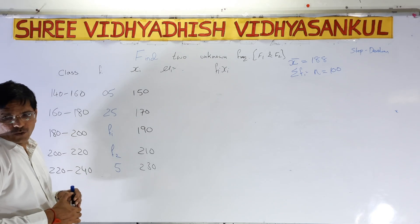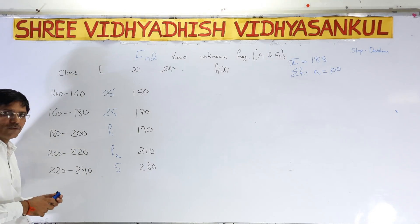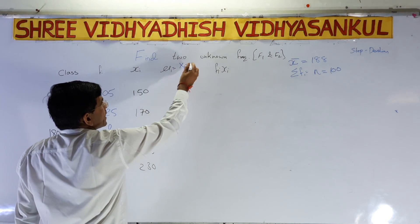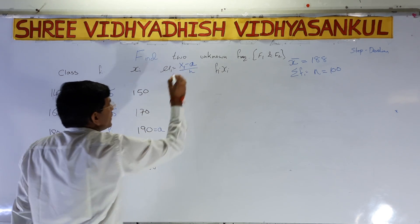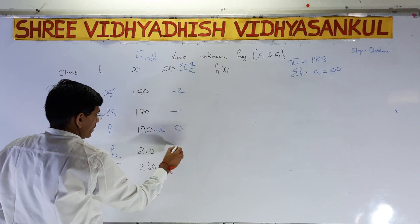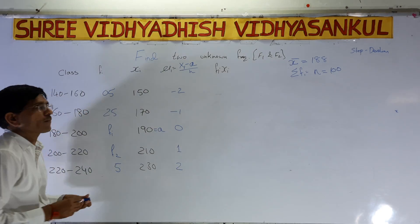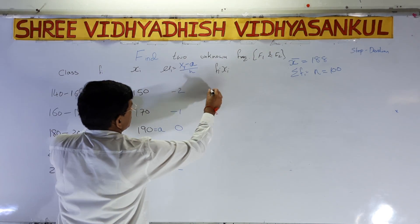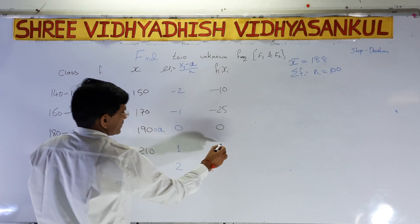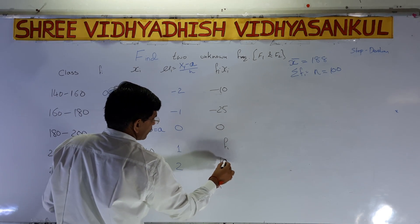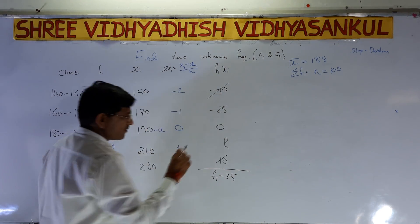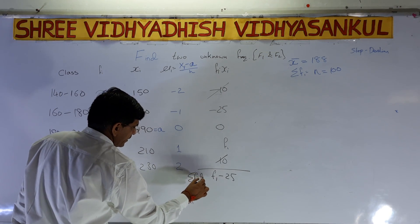We need to assume A somewhere — either at f1 or f2. I assume A = 190 (where f1 is). Then ui = (xi − 190) / 20, giving values: −2, −1, 0, 1, 2. Now fi × ui: 5 × (−2) = −10; 25 × (−1) = −25; f1 × 0 = 0; f2 × 1 = f2; 5 × 2 = 10. So sigma fi·ui = f2 − 25.